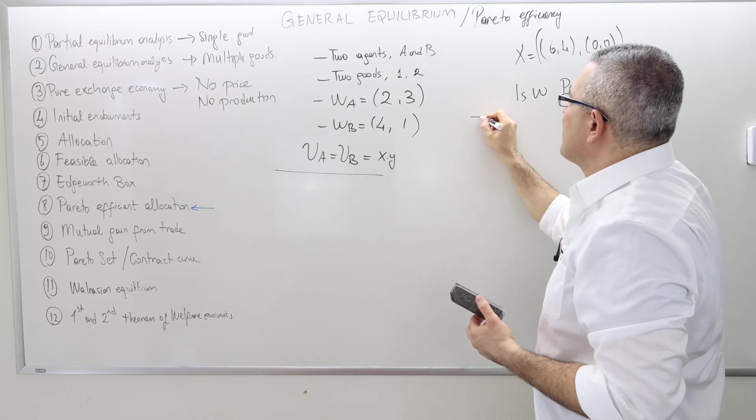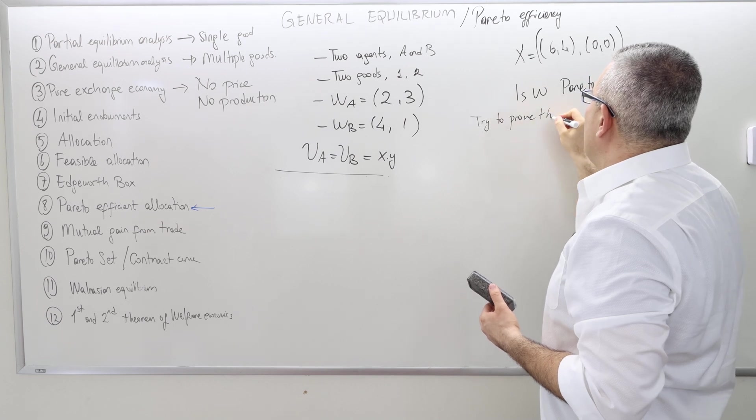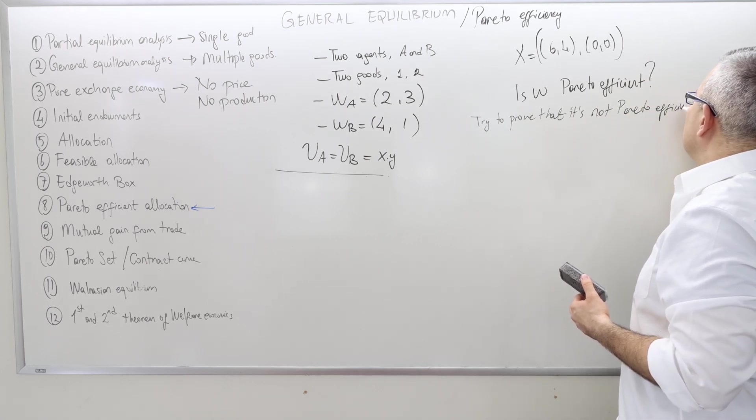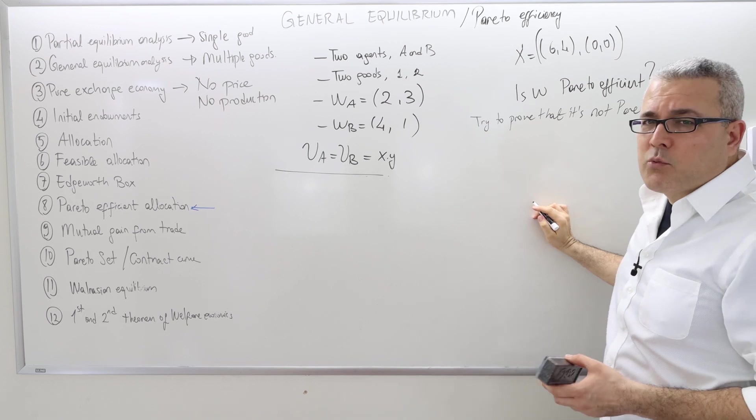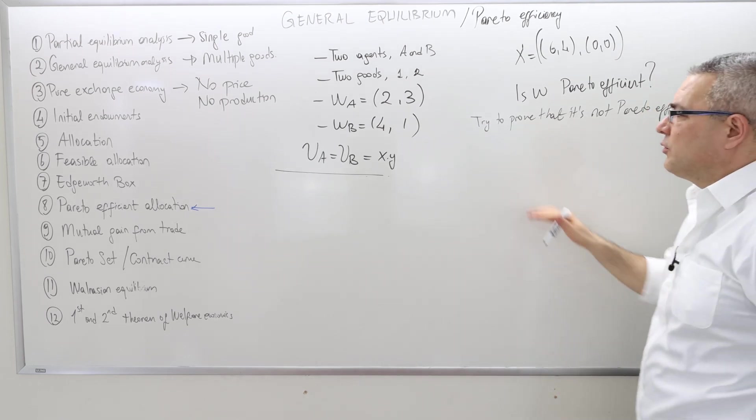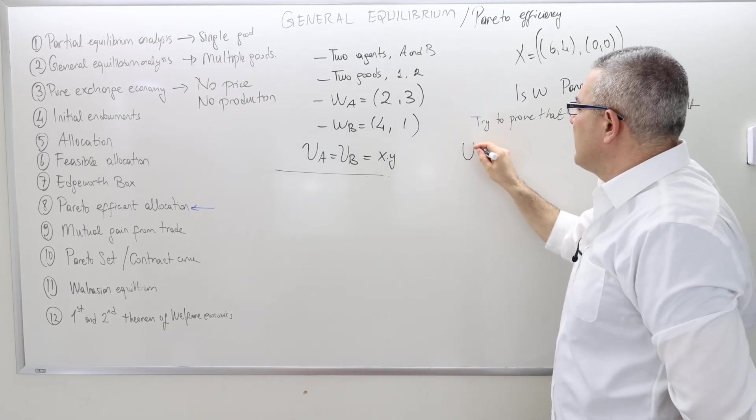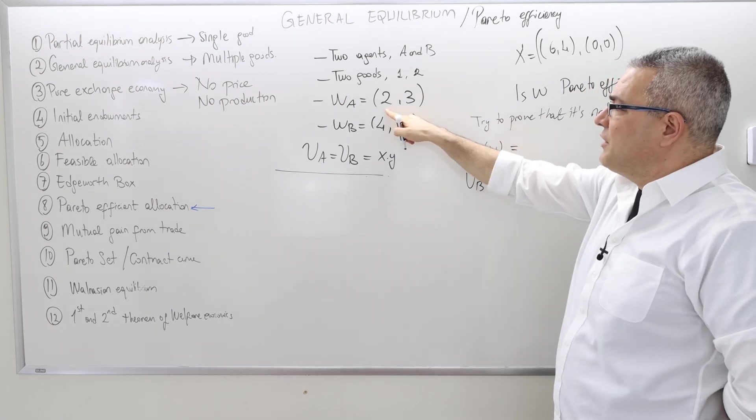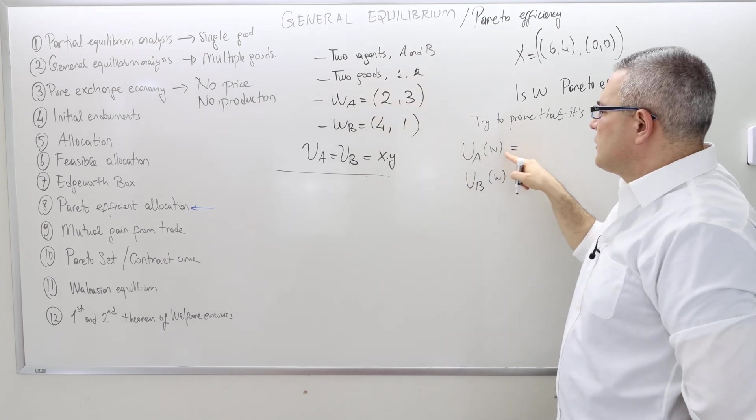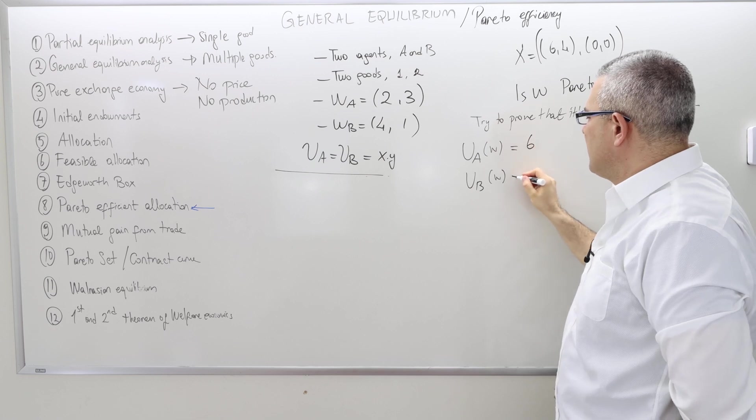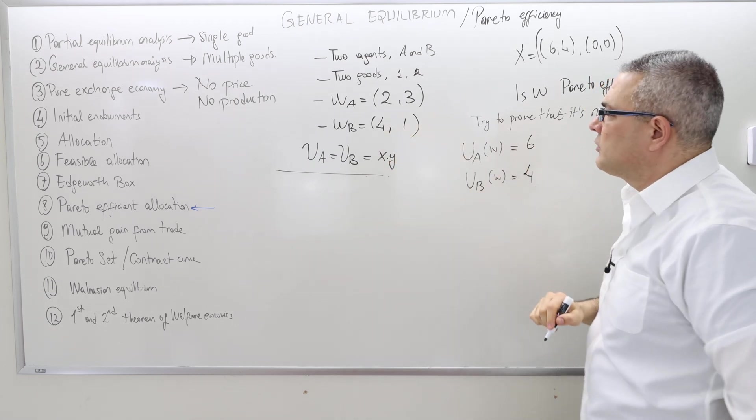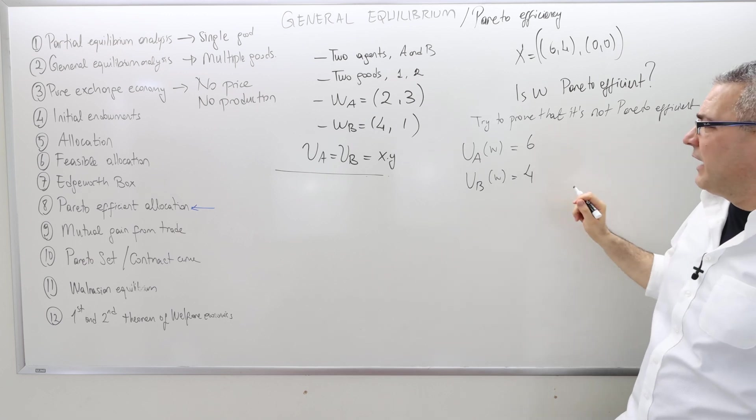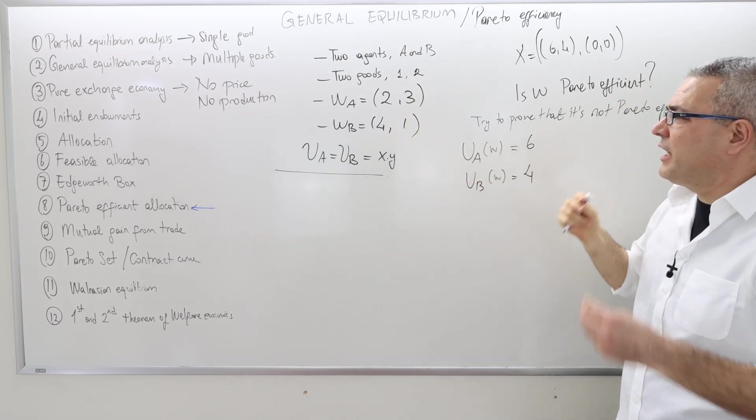First, try to prove that it is not Pareto efficient. That means I have to come up with some allocation where both agents will get higher utility. First of all, you have to calculate agent A and B's utility under the initial endowment. Under the initial endowment, agent A consumes two good one and three good two, so her utility is two times three, which is six. Agent B gets four times one, which is four. These are the initial utilities.